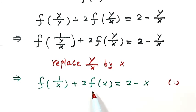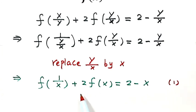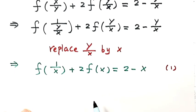Since we are looking for f of x, the good thing is we have f of x here. But we also have f of 1 over x. So in order to solve for f of x, we need to get rid of f of 1 over x. That means we need another expression or another equation which involves f of 1 over x.